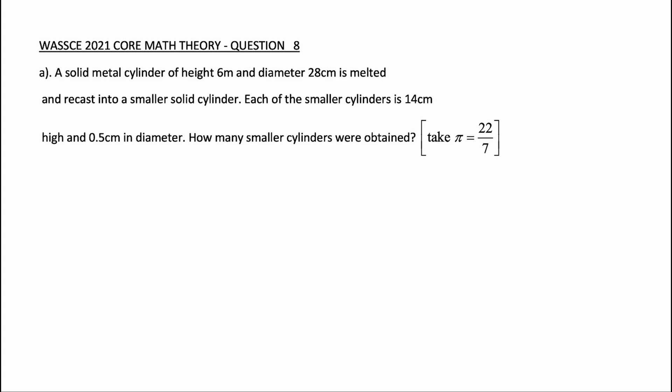A solid metal cylinder of height 6 meters and diameter 28 centimeters is melted and recast into smaller solid cylinders. Each of the smaller cylinders is 14 centimeters high and 0.5 centimeters in diameter. How many smaller cylinders are obtained? Take pi to be 22 over 7.